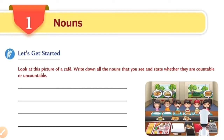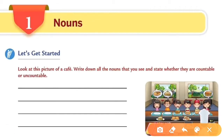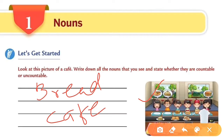Good morning everyone. Today we are going to start the first chapter: Nouns. First, we have to do this exercise. Look at this picture of a café. Write down all the nouns that you see and state whether they are countable or uncountable. For example, bread is an uncountable noun and café is a countable noun. In this way you have to do this exercise.